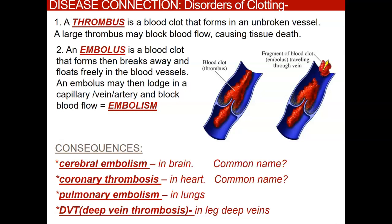There are some disorders of clotting. Clotting is a good thing we need all the time, but it can also be negative. A thrombus is a blood clot that forms in an unbroken vessel — not a normal clotting procedure. A large thrombus can block blood flow and cause tissue death. An embolus is a blood clot that forms and then breaks away and starts floating in your blood vessels, eventually becoming lodged in a capillary, vein, or artery and blocking blood flow. At that point, it's called an embolism.